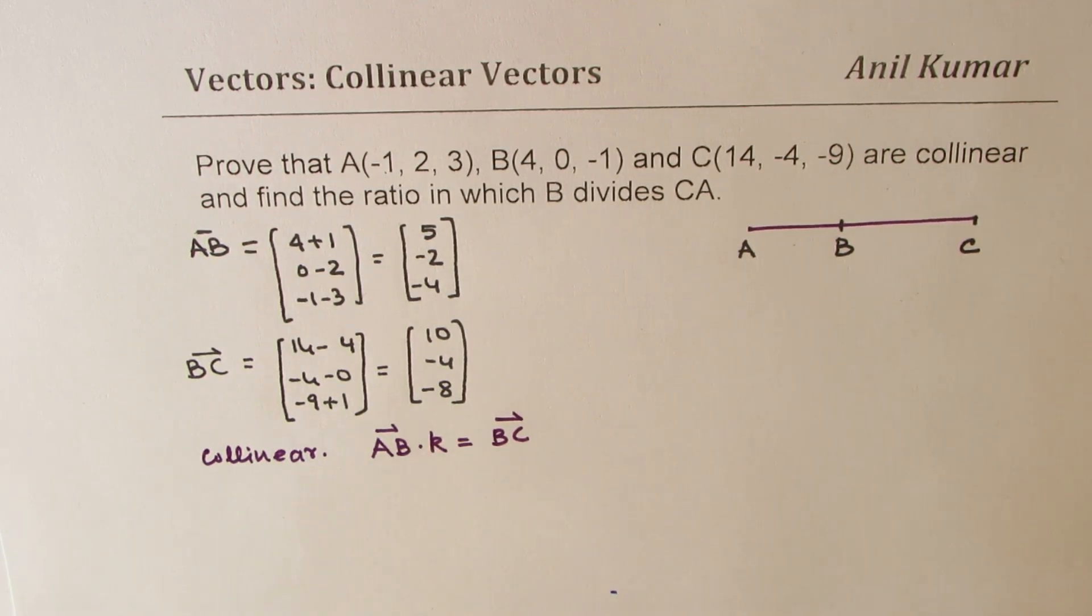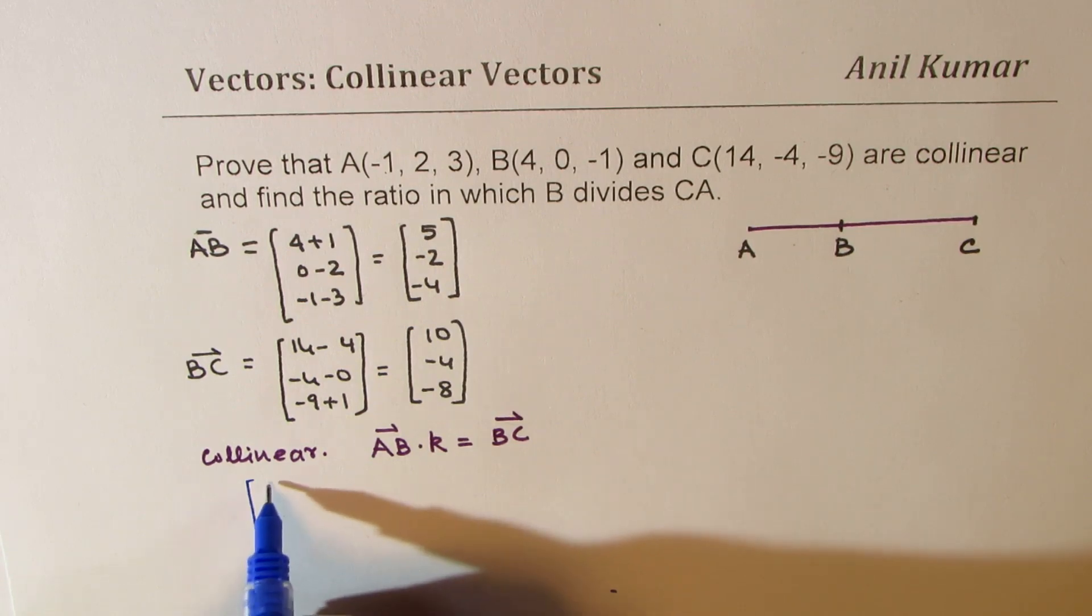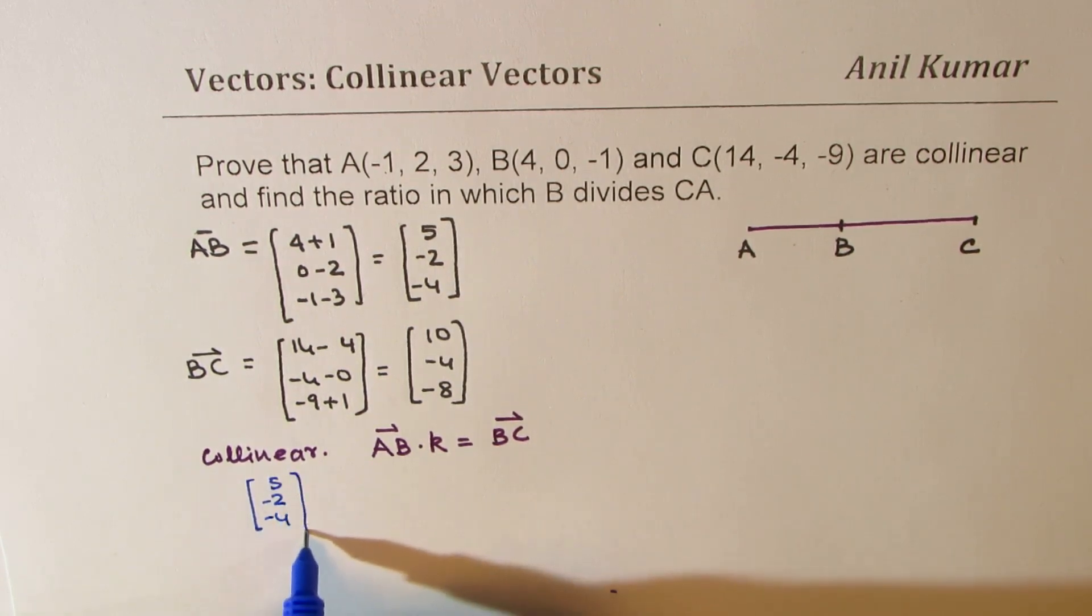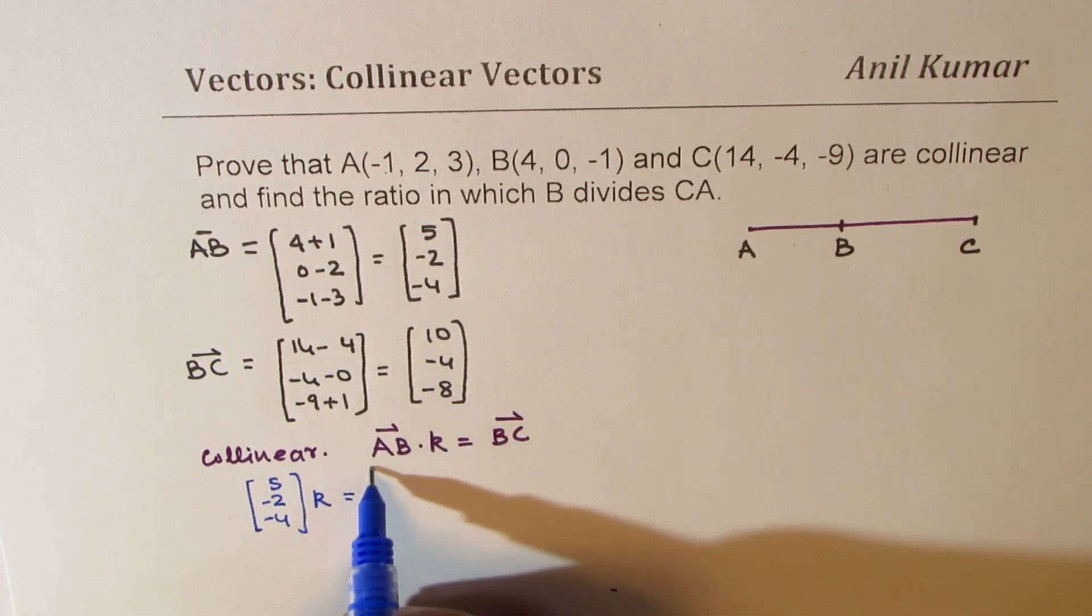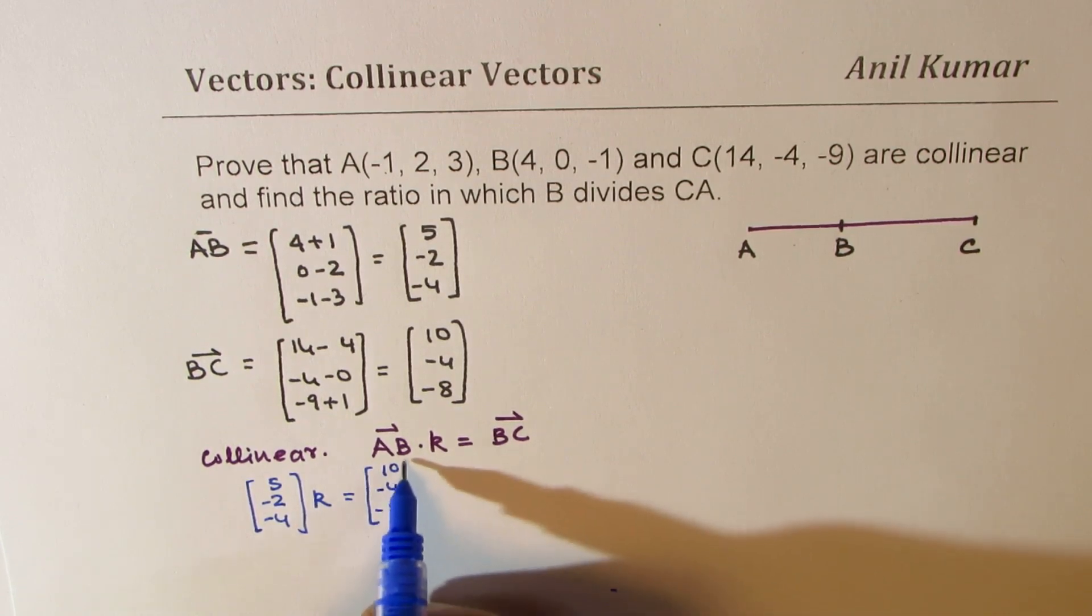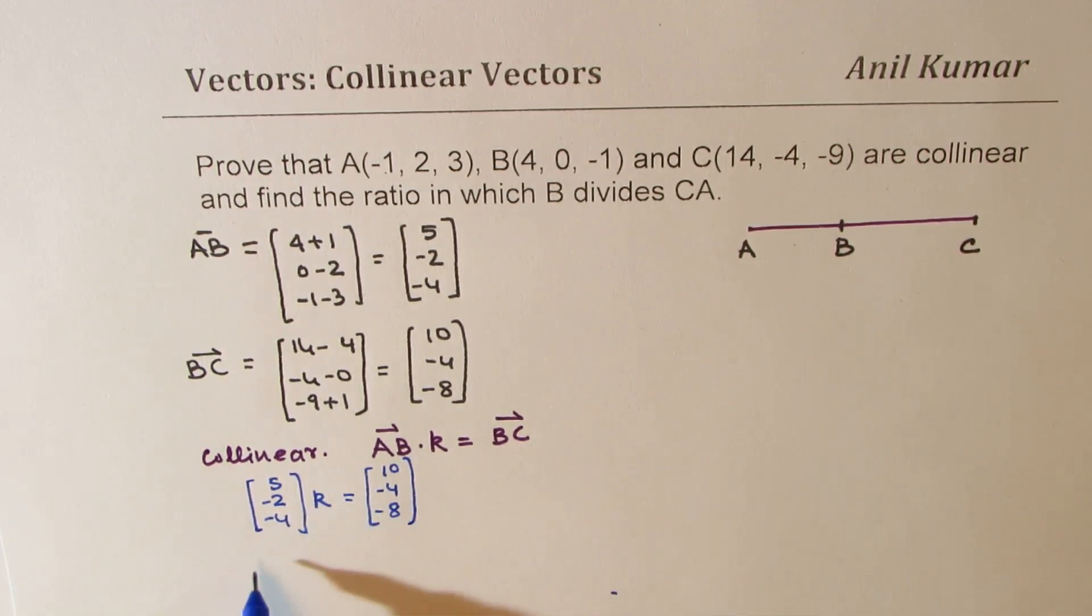AB which is (5, -2, -4) times k should be equal to BC which is (10, -4, -8). You can clearly see that k is equal to 2.